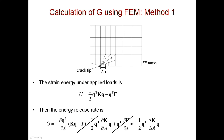Once you have the deflection and the stiffness matrix of the whole system, you can calculate the derivative of the strain energy with respect to crack length. When you take that derivative, if the force remains the same as the crack grows, the derivative of F with respect to crack length is zero. This simplifies to give you G equal to negative one-half times q transpose times the change in stiffness divided by the change in crack length times q.